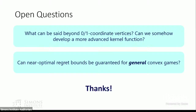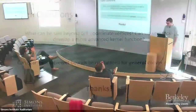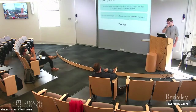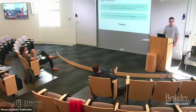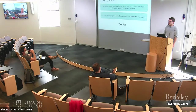That's all I had. Happy to take questions. From the moderator: a classical approach to handling combinatorial action sets is follow-the-perturbed-leader, which requires linear optimization over the decision set. When going beyond zero-one coordinate vertices, is there any hope of getting something that works at that level of generality?